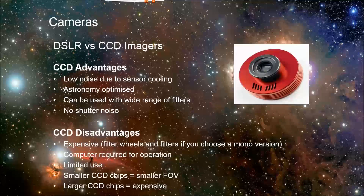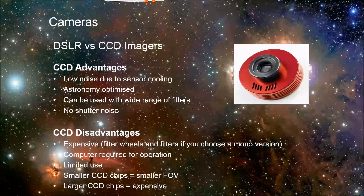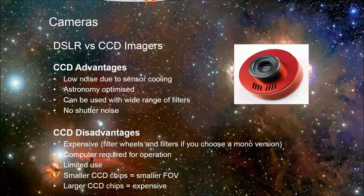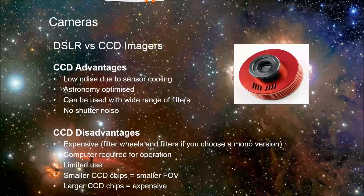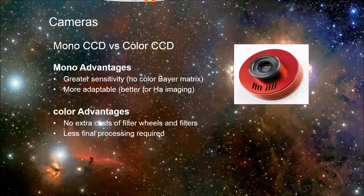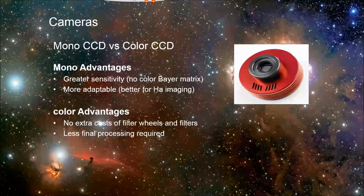CCD cameras generally need a computer for operation, and since they're optimized for astrophotography, you won't be using them during the day. The sensor chips are typically smaller than what you get in a DSLR — even smaller than a crop sensor — resulting in lower resolution and a smaller field of view. Larger CCD chips do exist but tend to be expensive. On the sensitivity side, mono CCDs have greater sensitivity because there's no Bayer matrix, and some use microlenses instead, which further improves sensitivity.